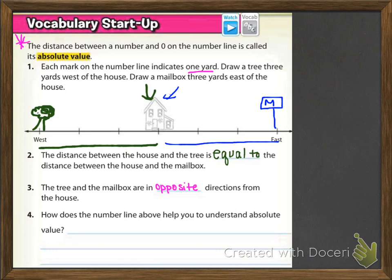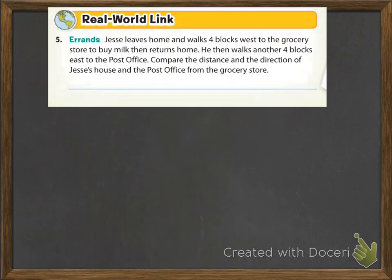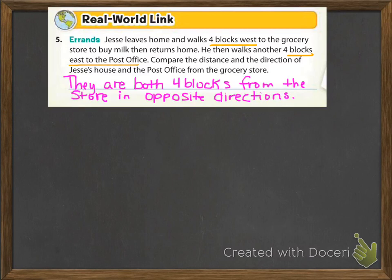Number four asks: how does the number line above help you understand absolute value? The house is at zero on the number line. The tree and mailbox are the same distance from the house in different directions — that's basically how you understand absolute value. Under the real world link, it says Jesse leaves home and walks four blocks west to the grocery store, then returns home, then walks another four blocks east to the post office. They are both four blocks from the store in opposite directions.